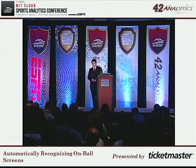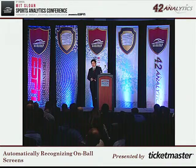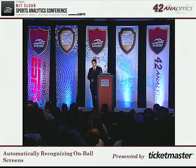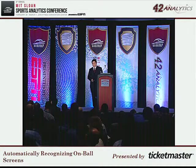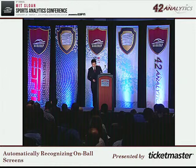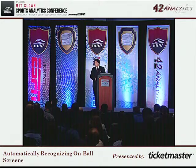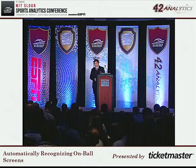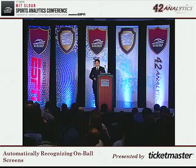Now comes the classification step. Before we go into too much detail, let's talk about how you can measure classifier performance. I'll briefly describe the three measures we used. Sensitivity is essentially how many of the on-ball screens that exist did you correctly classify. Specificity is how many of the non-on-ball screens did you correctly classify as not being on-ball screens. And positive predictive value is the likelihood that if you label something as an on-ball screen, it actually is an on-ball screen — essentially, how confident are you in your labels.